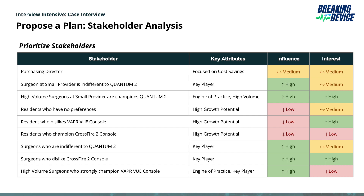Similarly, you can map out interest. The way you derive interest is by looking at who champions the products. Individuals who are already champions of the Quantum 2 are going to have very high interest in pursuing your product. If someone champions Stryker's Crossfire instead, they're going to have low interest in the product you're looking to sell. Go through and map these out by high, medium, and low — and feel free to pause the video to take time to really understand this slide.